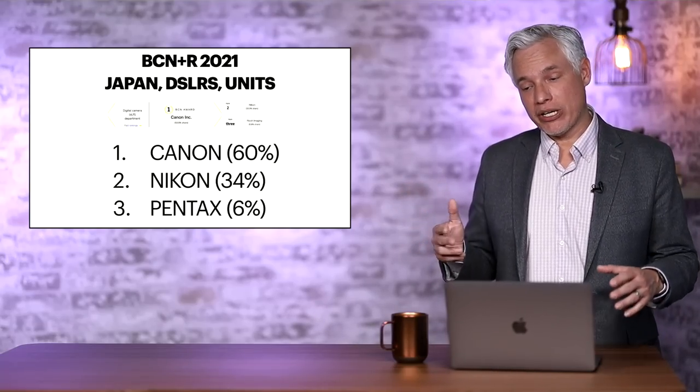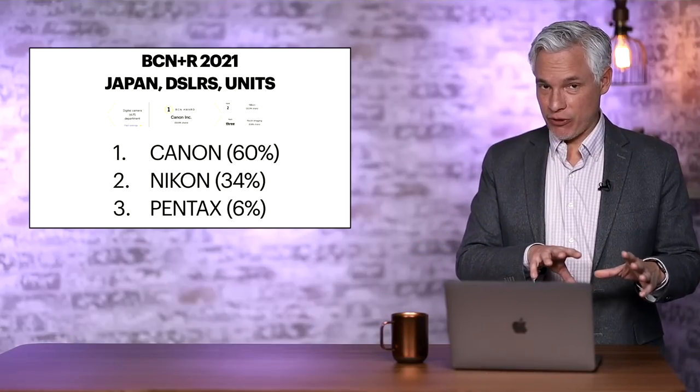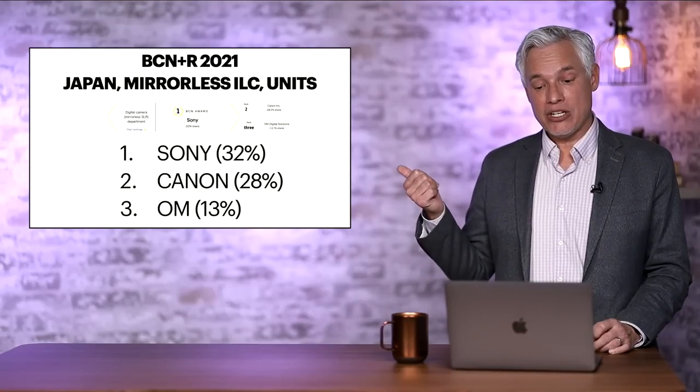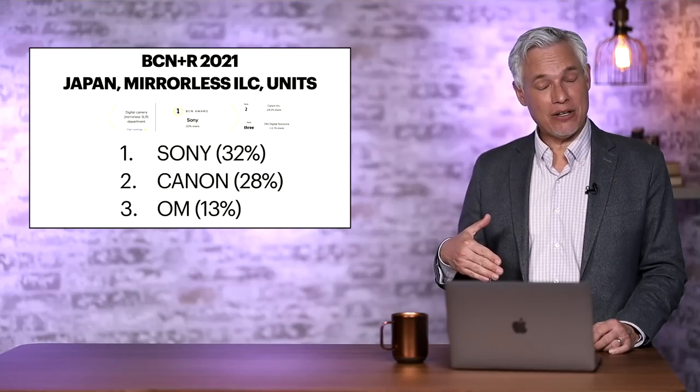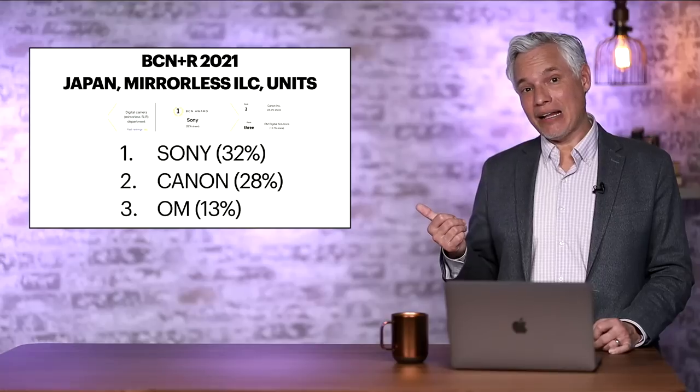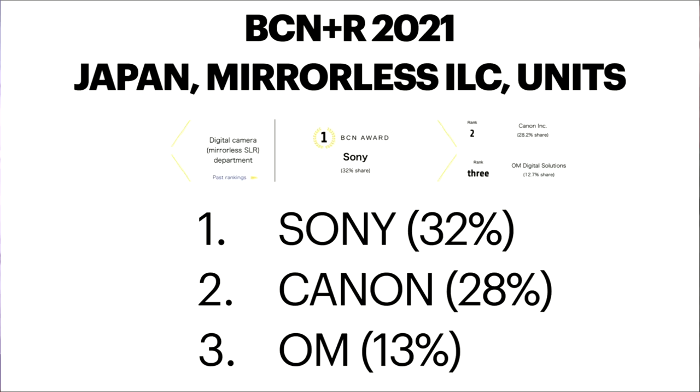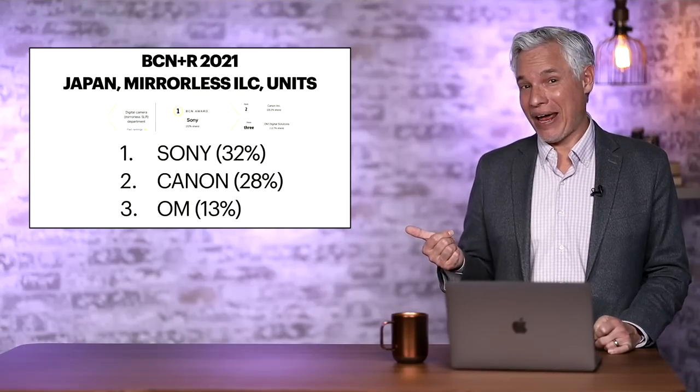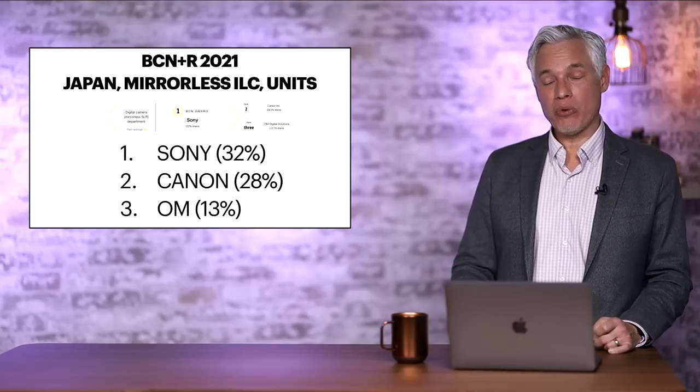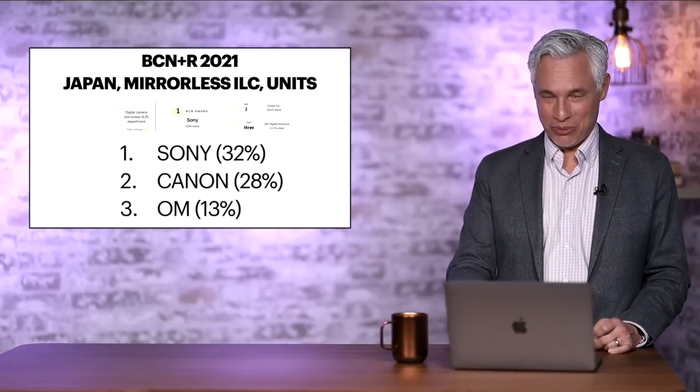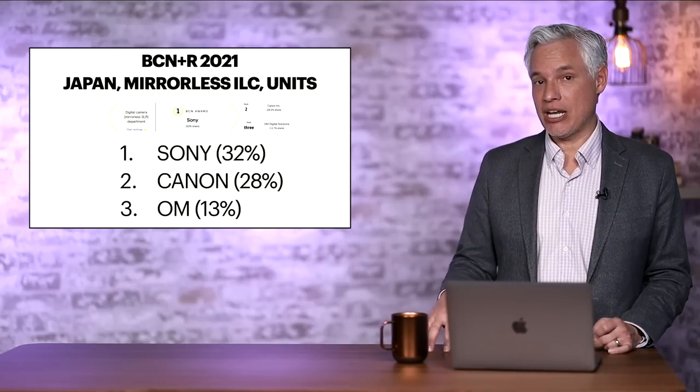Now, if we look at just mirrorless units in Japan, we see that Sony has the lead, but it's a pretty narrow lead, followed closely by Canon. And in third place, OM Systems. And I saw the Olympus fans really jumping on this one particular stat to show that Olympus was still alive. However, their market share has fallen by about half from the previous year. And again, we are really cherry picking the data here to look at only mirrorless interchangeable lens cameras sold in Japan by units and not by value.